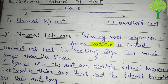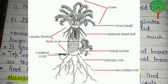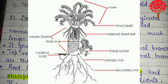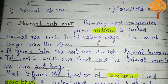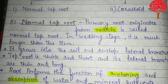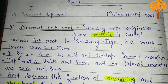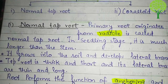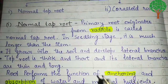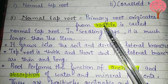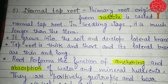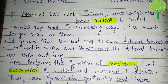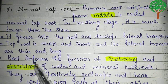In Cycas, the normal tap root arises from the radicle of the seed and is called the normal tap root. Its tap root in the seedling stage is much longer than the stem. The normal tap root has the same morphology as that of a typical dicot angiosperm — it grows into the soil and develops lateral branches. The root is thick and short, and its lateral branches are thin and long.